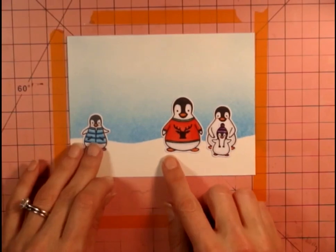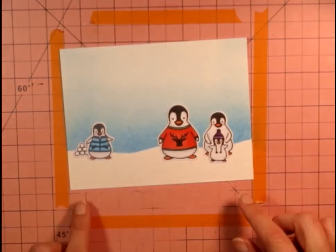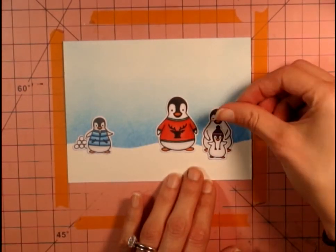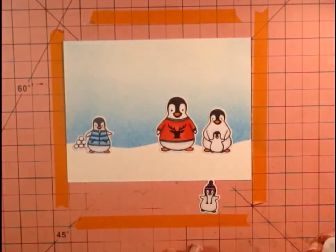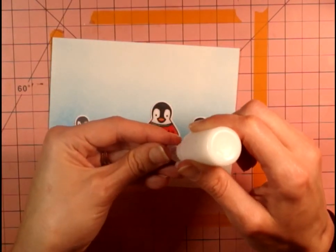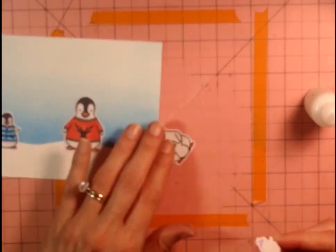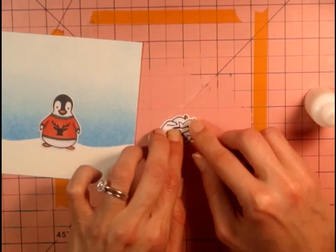I'm trying to figure out the placement here. I wanted to have the little boy throwing the snowball at the dad and not the mom.